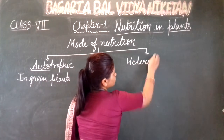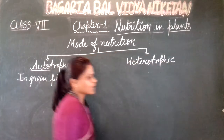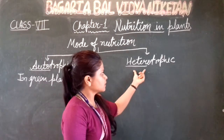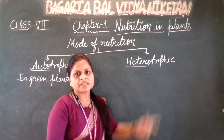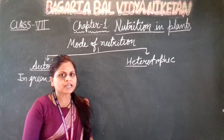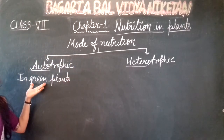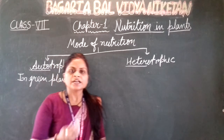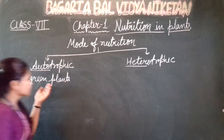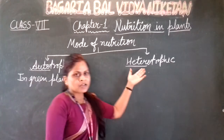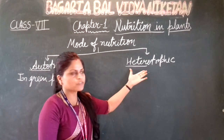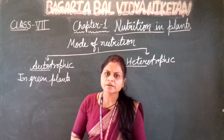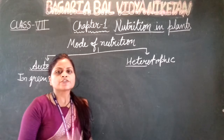The second mode of nutrition is heterotrophic. Hetero means different. In this heterotrophic mode of nutrition, the living beings are dependent directly or indirectly on the green plants for their food. They cannot synthesize their own food, जैसे कि plants अपना food अपने आप बना लेते हैं।